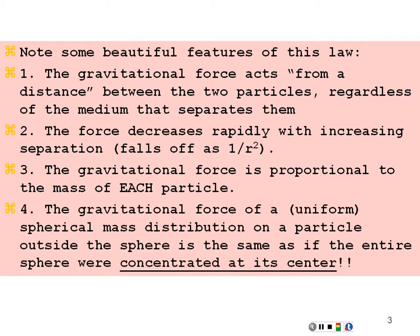The gravitational force of a uniform spherical mass distribution on a particle outside the sphere is the same as if the entire sphere were concentrated at its center. So if I'm talking about the gravitational attraction between a sphere and something else, I treat the sphere as if all of its mass were located at its center of mass — in the center of the sphere — not from the surface.